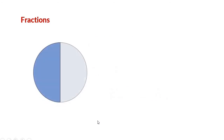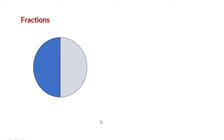Look at the circle. It is divided into two equal parts. The blue part is one out of two parts, so we can call it as 1 by 2 or half. The second part is also one out of two parts, so we can also call it as 1 by 2 or half.